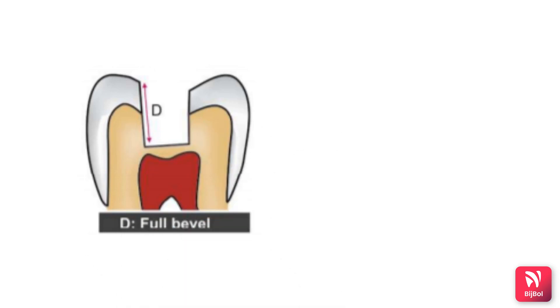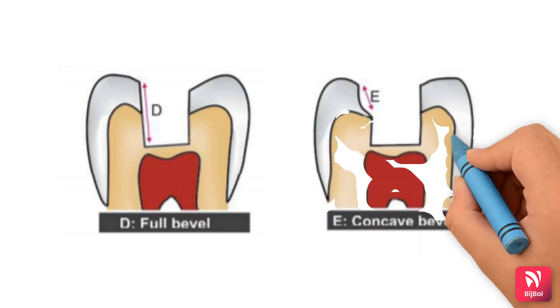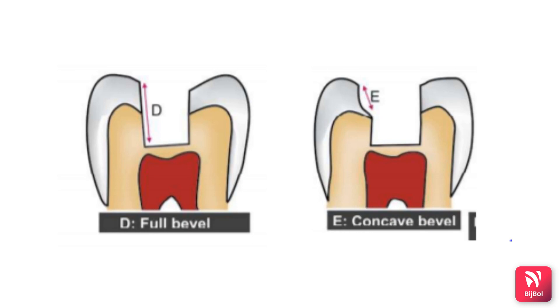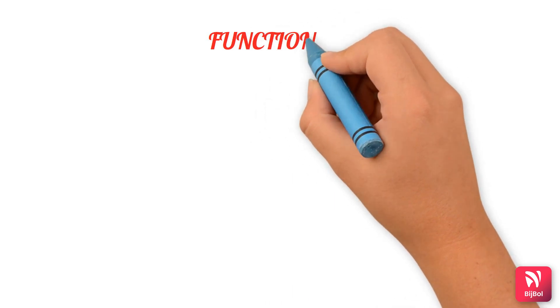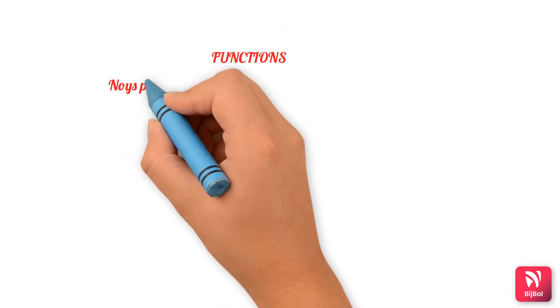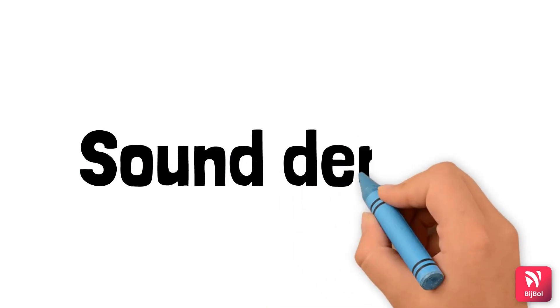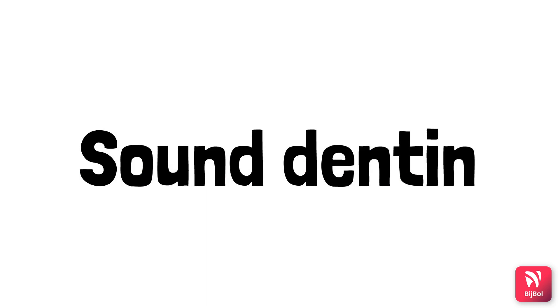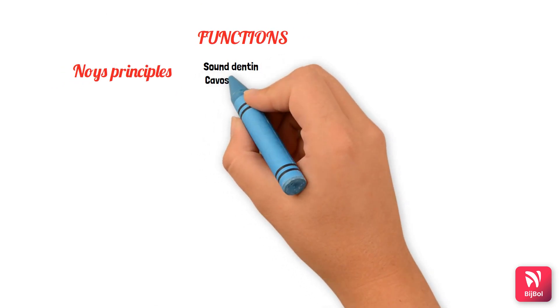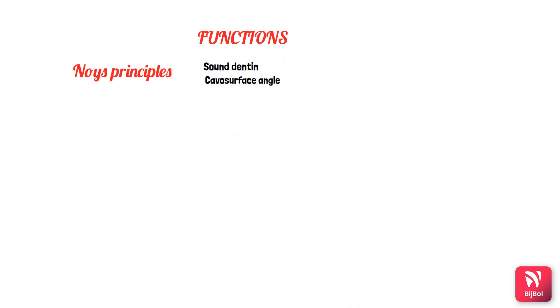A full bevel includes the entire preparation of the enamel and dentinal wall. It is used as a last resort as it deprives the preparation of all its resistance and retention form. A counter bevel is used when the cusps require capping for protection. The functions of cavity bevels must satisfy the requirements of ideal cavity walls according to Noy's principle: the enamel should rest on sound dentin, and the enamel rods forming the cavosurface angle must have their inner ends resting on sound dentin and be covered with a restorative material.